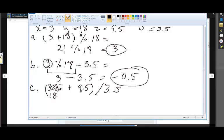So it's 18 plus 9.5. 9, 27, that's 27.5 for this part right here. And that needs to be divided into 3.5.